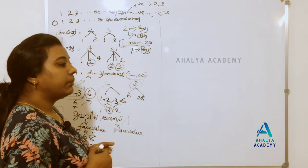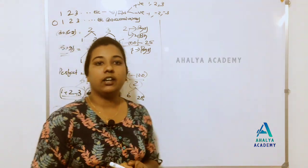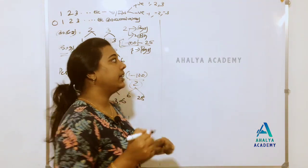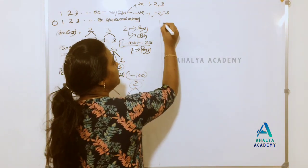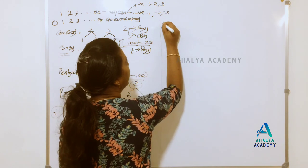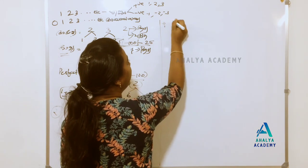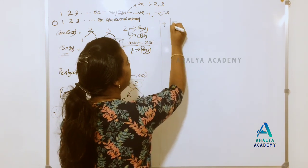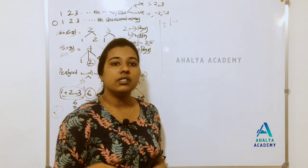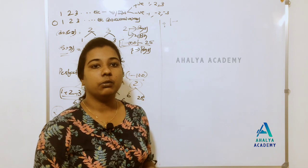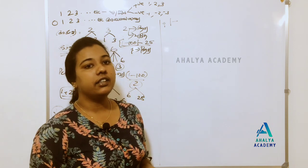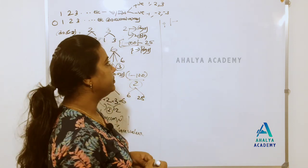Look, you have two types of integers — positive integers and negative integers. How does that mean? Positive integers and negative integers.